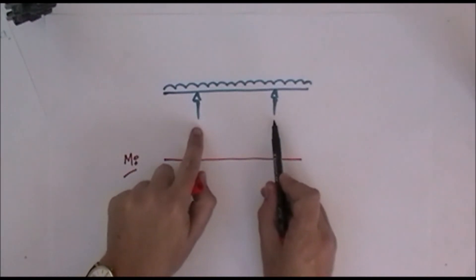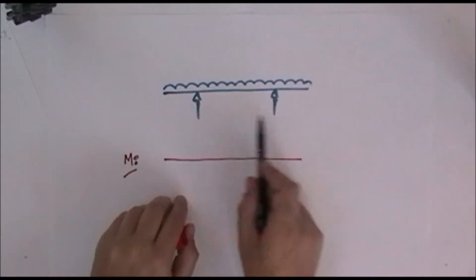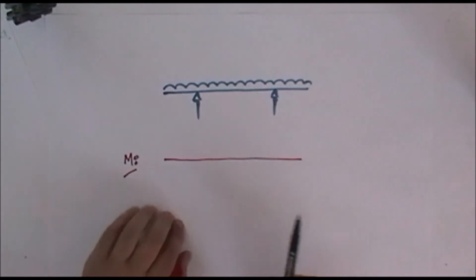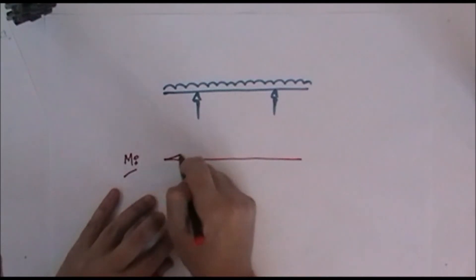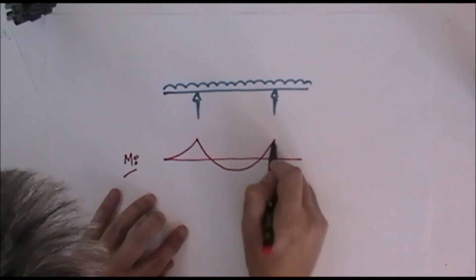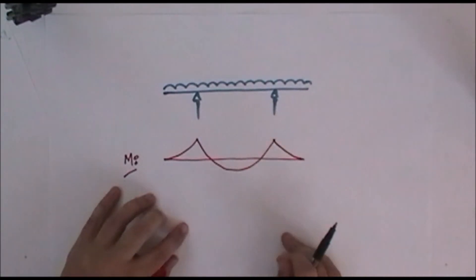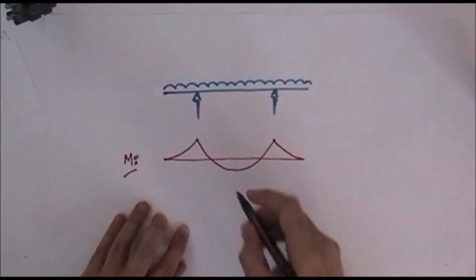But at these two points and on its length, it's going to be pushed back up because of these two support reactions. So we're going to end up with a shape which is, of course, the bending moment diagram for the beam. Now, how do I know that this is true? Well, if I take a cut at any point, say there,